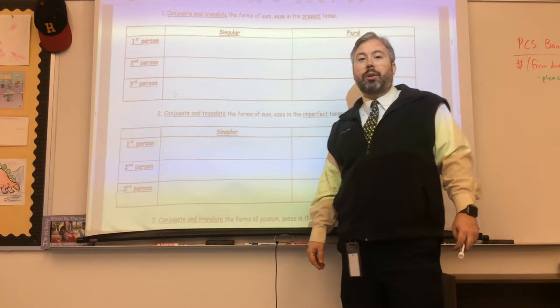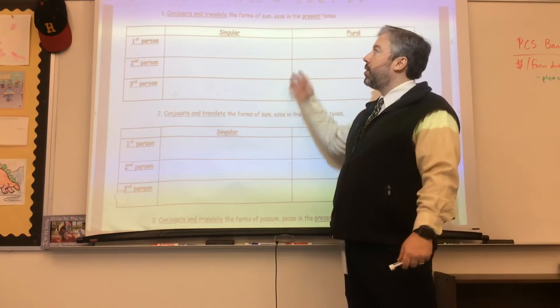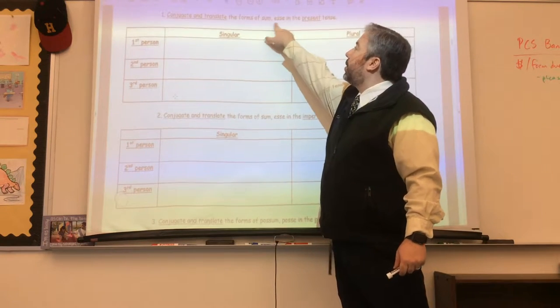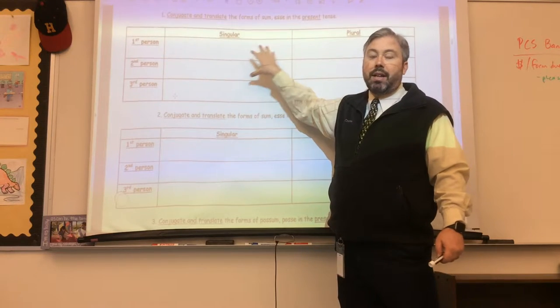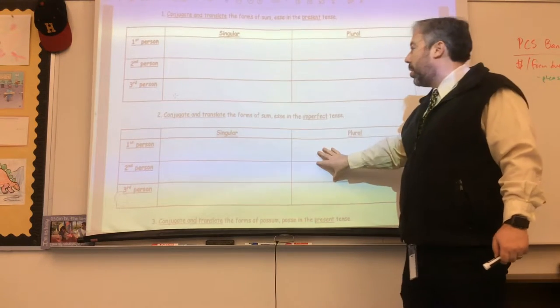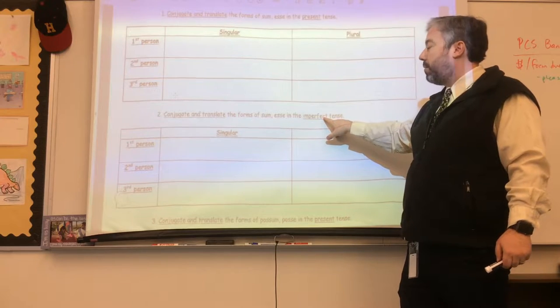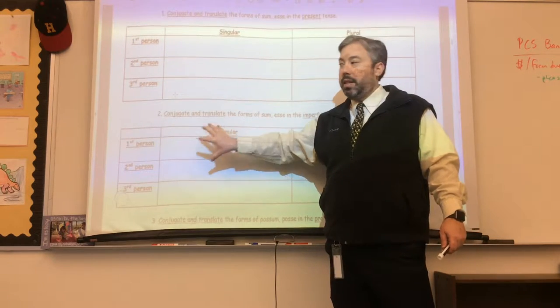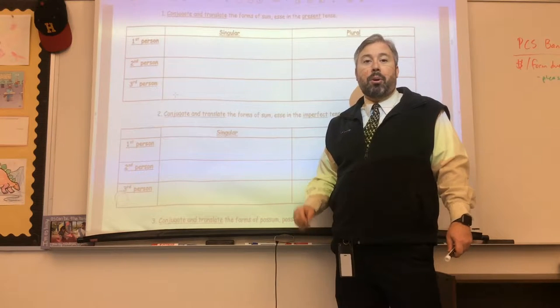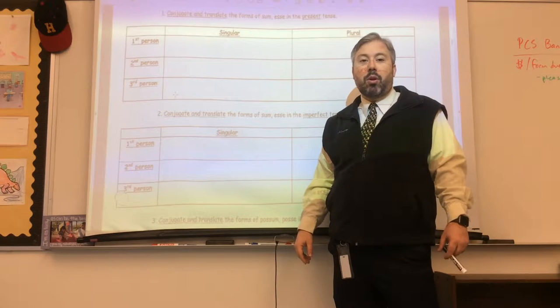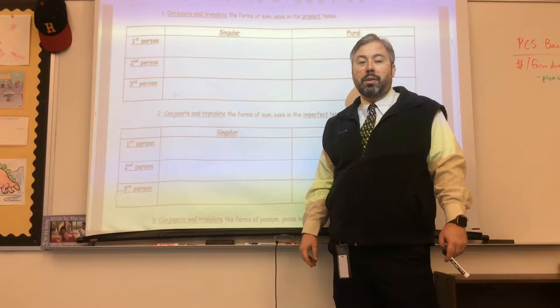First we're going to look on page four in our packet. You can see the charts here - you're going to write sum and esse in the present tense in Latin and then in English. And then also below, you're going to write the imperfect forms of to be in the Latin and the English. Go do that now. You probably want to hit pause on the YouTube video.